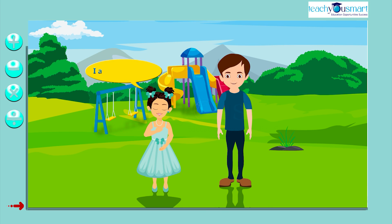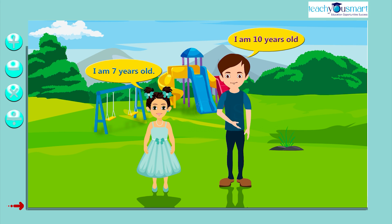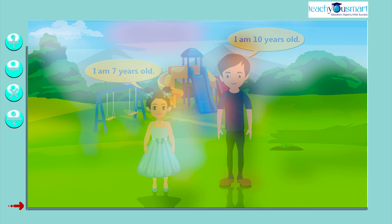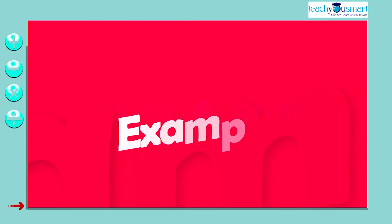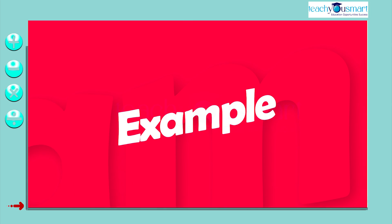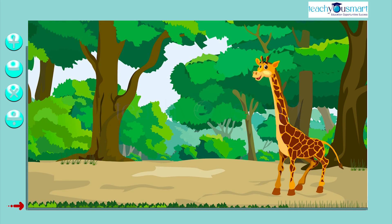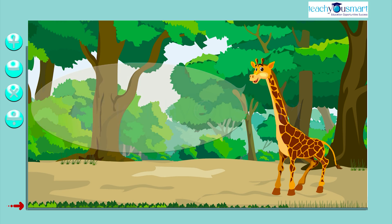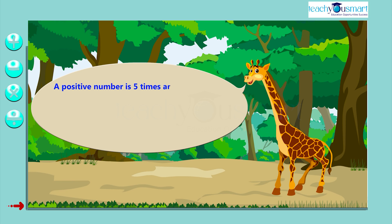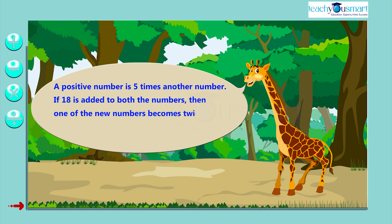Anima says: I am seven years old. Kunwa says: I am ten years old. Take another example. A positive number is five times another number. If 18 is added to both the numbers, then one of the new numbers becomes twice the other new number. What are the numbers?